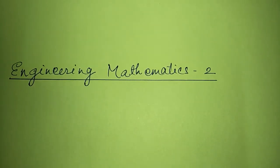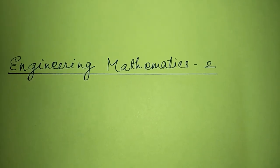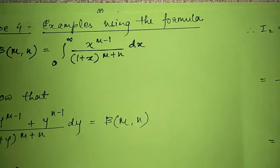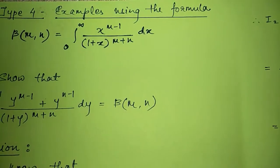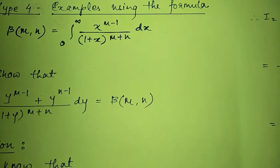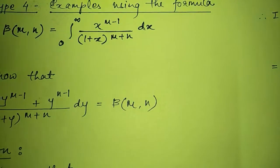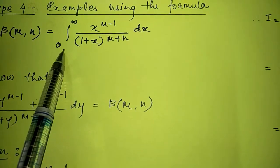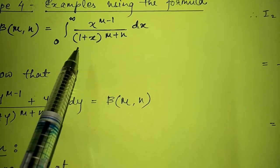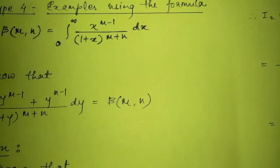Hello students. Today in this video we will see yet another type of numericals based on beta function. Here we are going to make use of the property of beta function which we have studied earlier, which is yet another definition of beta function: beta(m,n) is equal to integral from 0 to infinity of x raised to m minus 1, upon 1 plus x bracket raised to m plus n, dx.